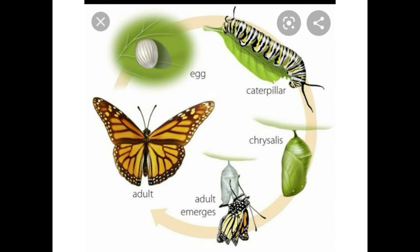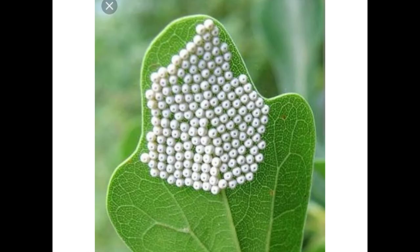Butterflies go through four life stages and they look very different at each stage. The first stage of the life cycle of a butterfly is eggs. The tiny eggs are laid by the female butterfly on the leaves.